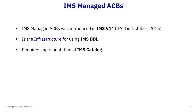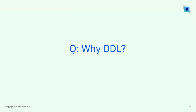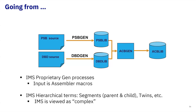This is the first question I want to answer very clearly. I was presenting at the Nordic conference last week and someone asked: why are you requiring us to implement IMS managed ACBs? The answer is because it's the infrastructure that will allow us to implement IMS DDL. Why DDL? Why are we going that route? Here is how we generate database-related control blocks in IMS today: you code your PSBs in assembler macros, use the PSB gen utility to gen that PSB into the PSB library, code your DBD in assembler macros, use the DBD gen utility to gen that into the DBD library, and then for the online system you do an ACB gen, pre-building ACB blocks into the ACB library. That's what IMS uses to process calls to databases.